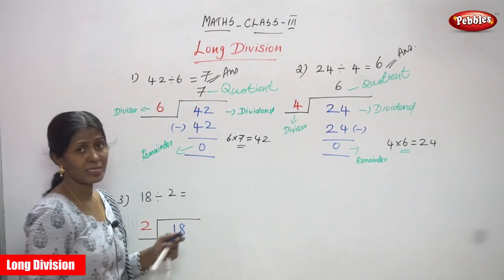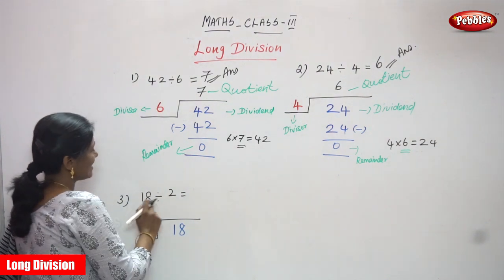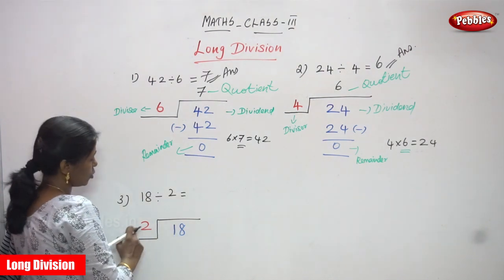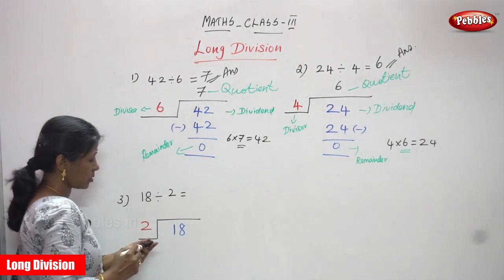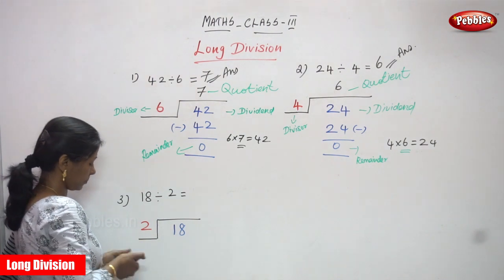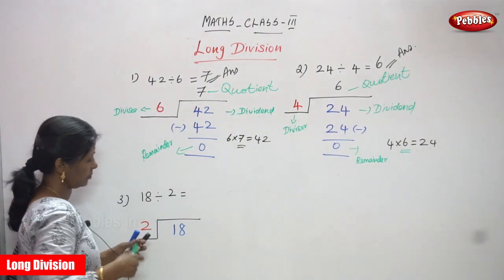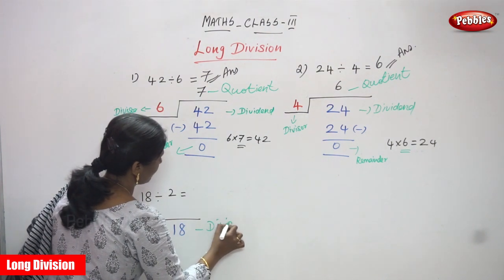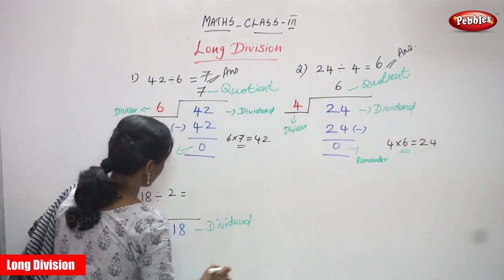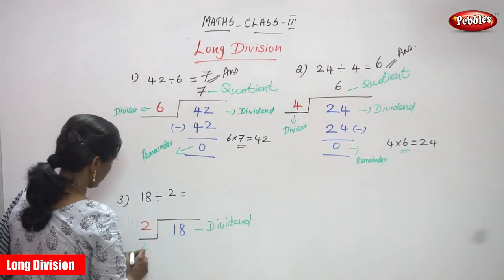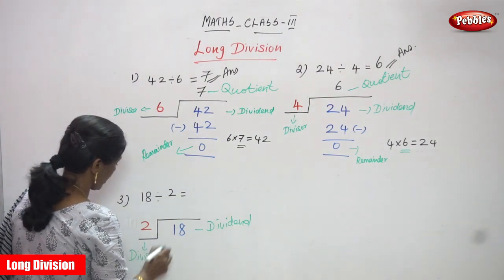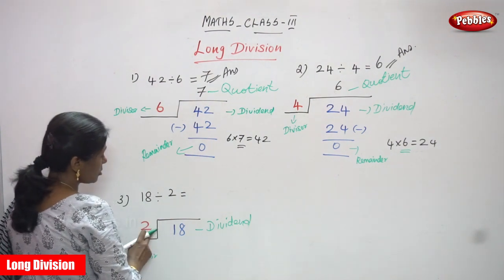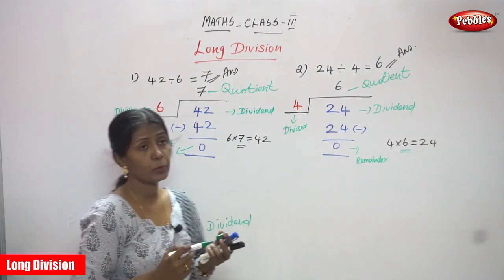Now we are going to see the third and last question. 18 is divided by 2. So 18 is the dividend, D-I-V-I-D-E-N-D, and 2 is the divisor, D-I-V-I-S-O-R. So you must use the 2 times table up to 18.